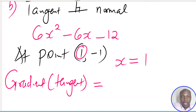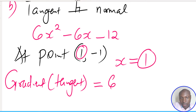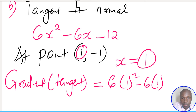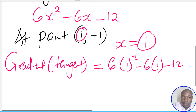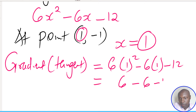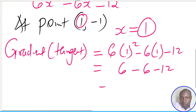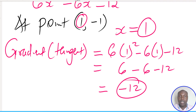So at x = 1, the gradient of the tangent is obtained by substituting into the gradient function: 6(1)² - 6(1) - 12. This gives 6 - 6 - 12, which equals -12. So -12 is the gradient of the tangent at the point (1, -1).